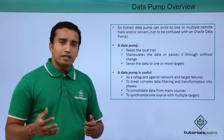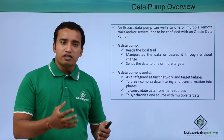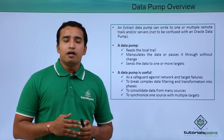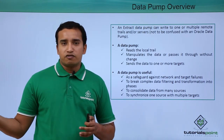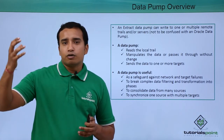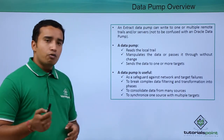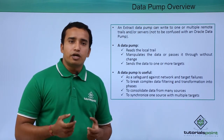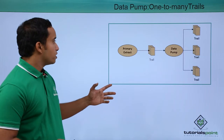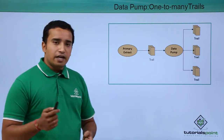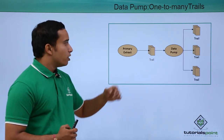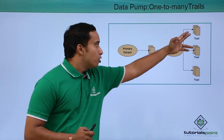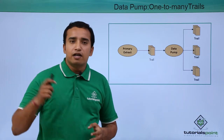You can manipulate the data before transferring it to the target site or the replicate site. You can send the data in chunks or send the data to multiple systems as well. Now we will see examples of how a data pump process transfers data to the trail file. In the first example, your primary extract extracts the data, puts it into a trail file, and then your data pump process sends the data from the trail file to multiple trail files at the target site.